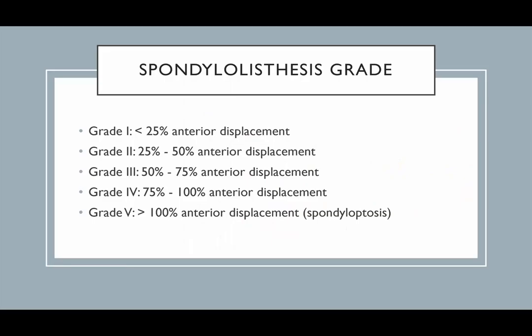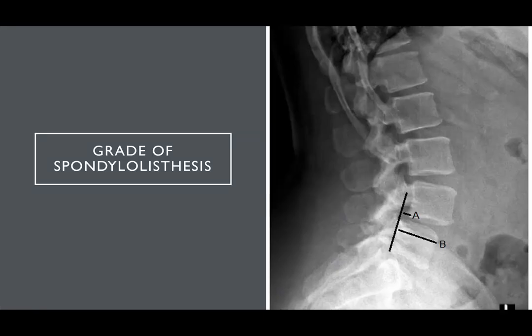There are grades based on how much displacement there is: less than 25%, 25 to 50%, 50 to 75%, 75 to 100%, or greater than 100%. When you have greater than 100%, the whole vertebral body has basically slipped off the adjacent one — that's called spondyloptosis. You grade it by looking at the diameter of the vertebral body, and A over B gives you the percent of slippage.